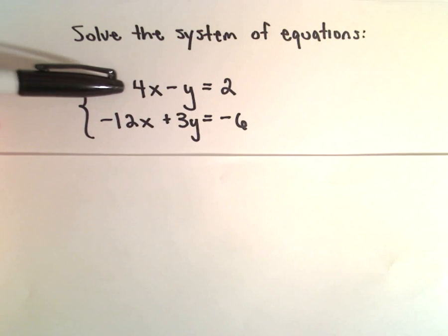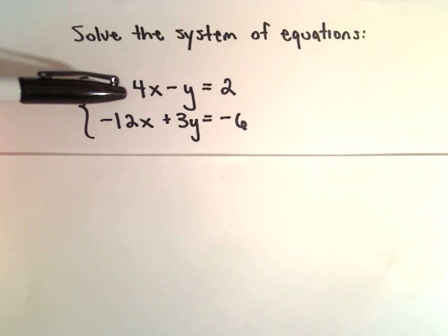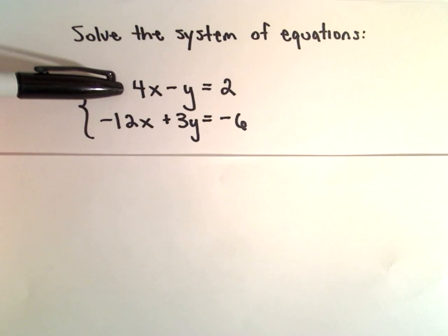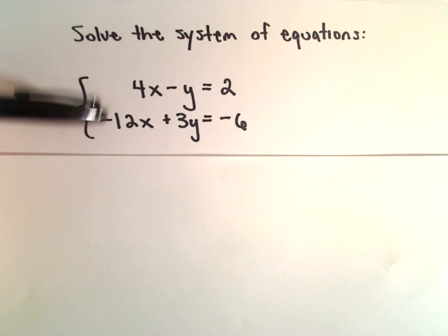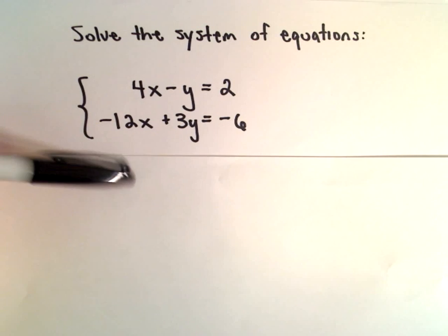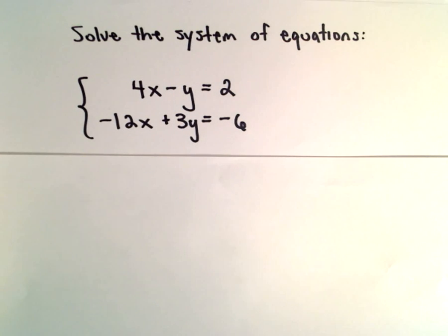So if I just had a positive 12x in my first term in my first equation, well, then I could add and I would have 12x minus 12x, the terms involving x would cancel.